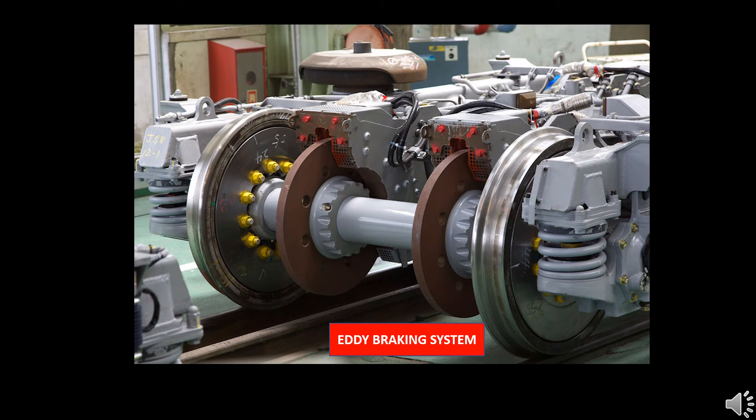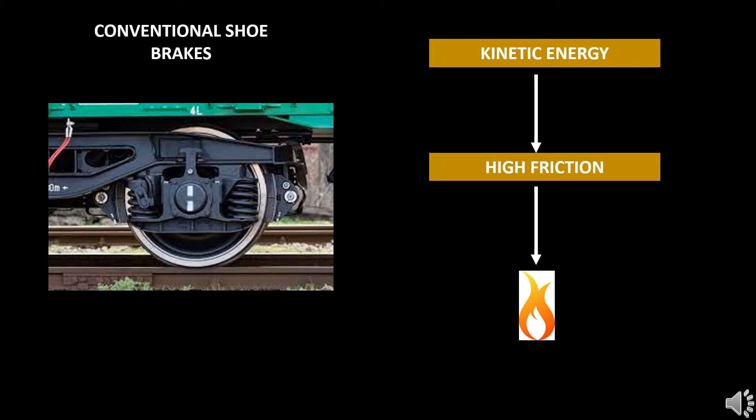These disc brakes are fixed on many axles of the train as required by the design. Since this braking system works on eddy current, it is also called eddy current braking system or eddy disc brake system. The eddy braking system is more efficient than the conventional friction based braking systems.